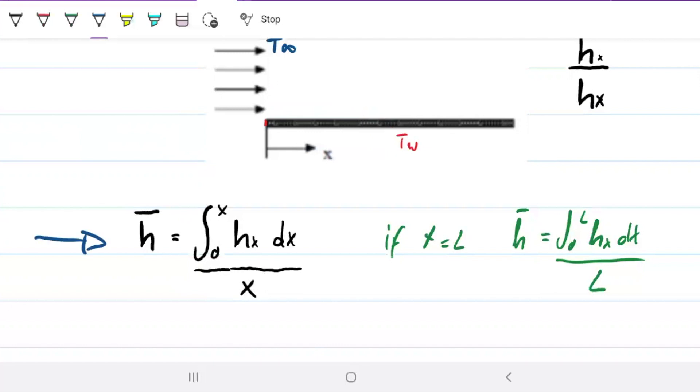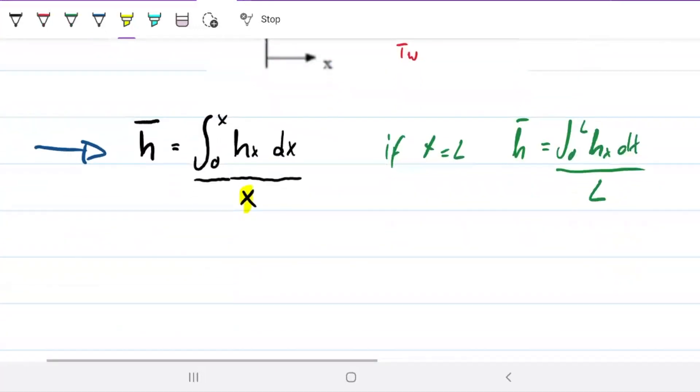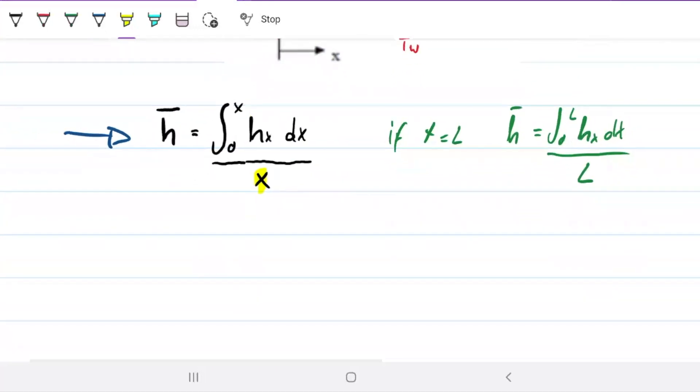So that will be my average. One thing to note is that this x is not part of the integral, because the integral is all the points, and we're dividing all the sum of all those points by distance that we traveled.